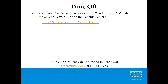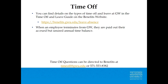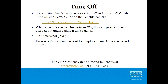Time Off: Details on types of time off and leave at GW can be found in the Time Off and Leave Guide on the Benefits website at benefits.gwu.edu. When an employee terminates from GW, they are paid out their accrued but unused annual time balance — sick time is not paid out. Kronos is the system of record for employee time off accruals and usage. Make sure time off is recorded for all employees. For questions, contact Benefits at timeoff@gwu.edu or 571-553-8382.